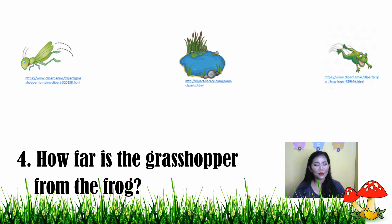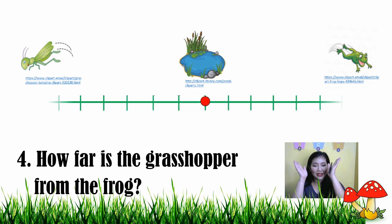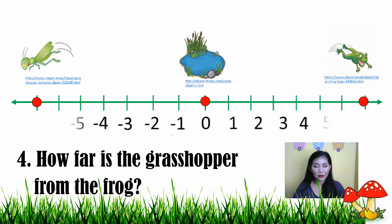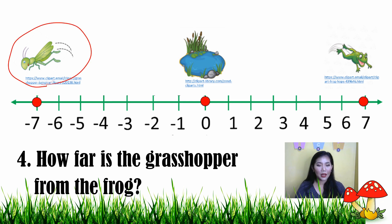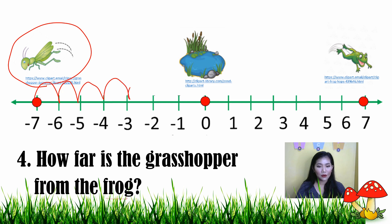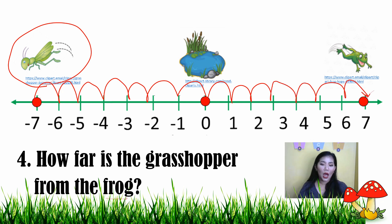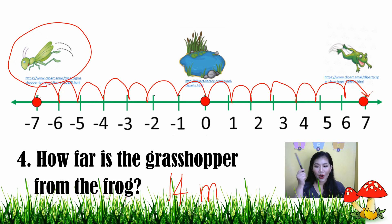Question number four: how far is the grasshopper from the frog? This time the question asks how far the grasshopper is from the frog. Using the number line, we count the steps from the frog to the grasshopper: 1, 2, 3, 4, 5, 6, 7, 8, 9, 10, 11, 12, 13, 14. So the answer is 14 meters — that is how far the grasshopper is from the frog.